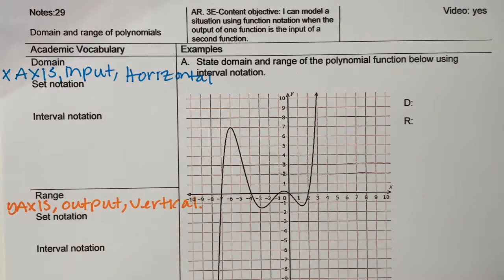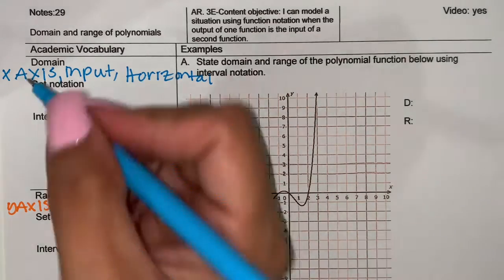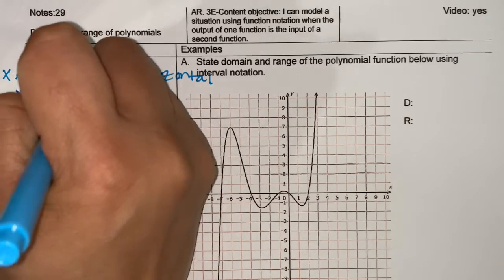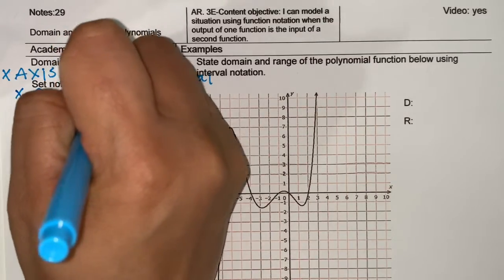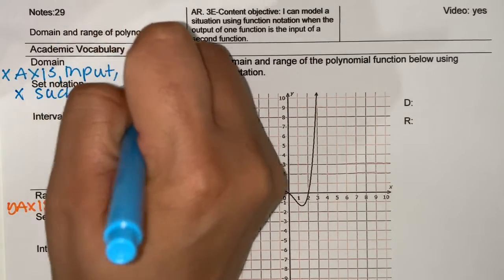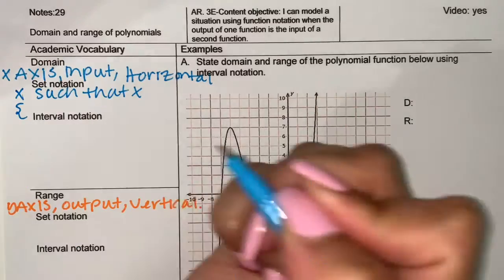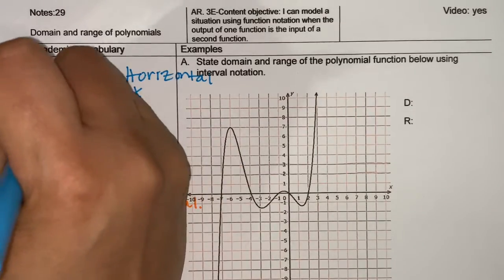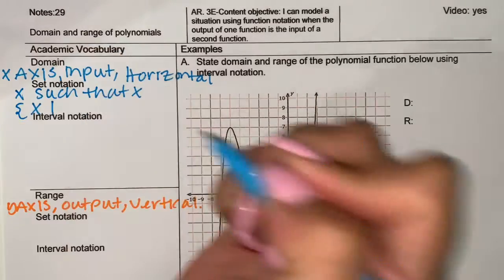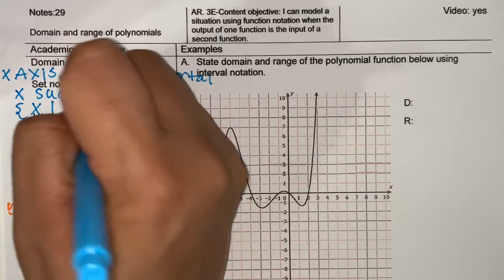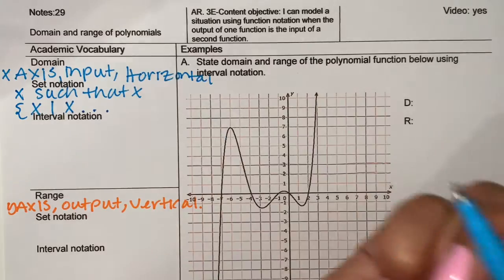Set notation is very specific. It says that x such that x. It has a little brace right here, x. The vertical line means 'such that x,' and then whatever you conclude.